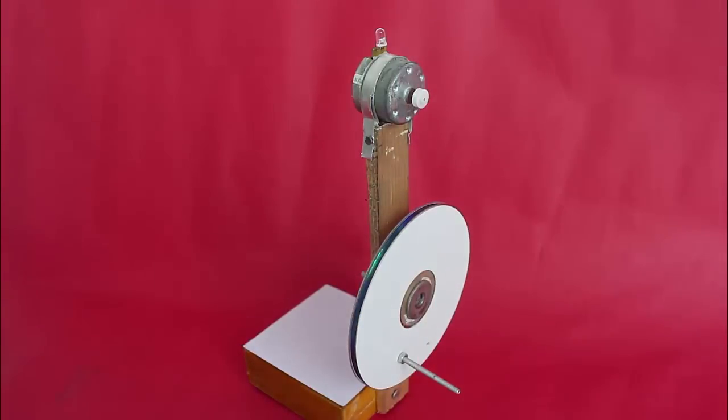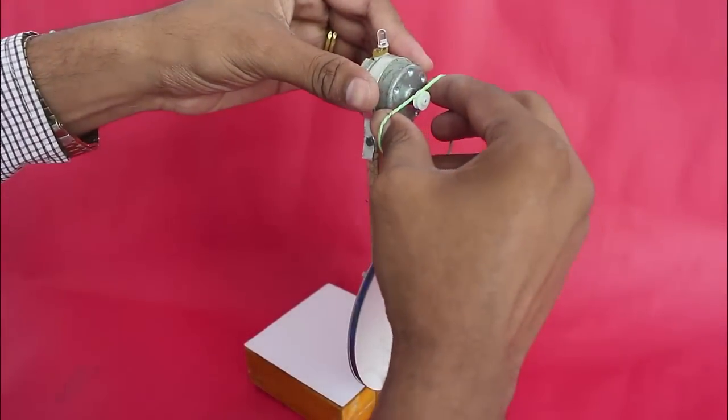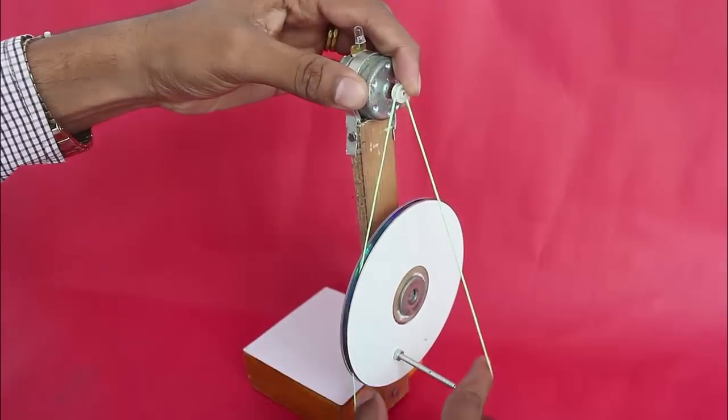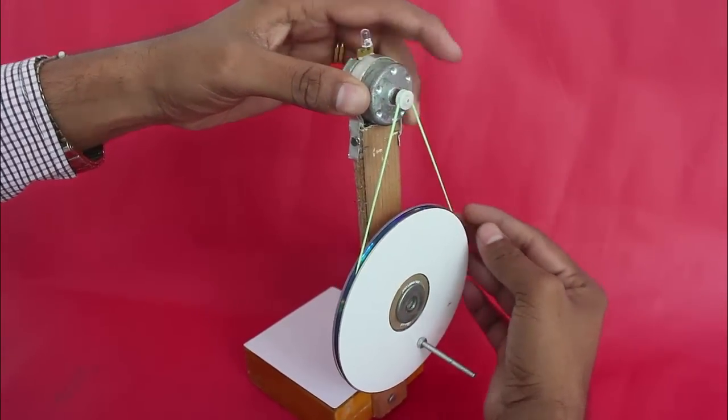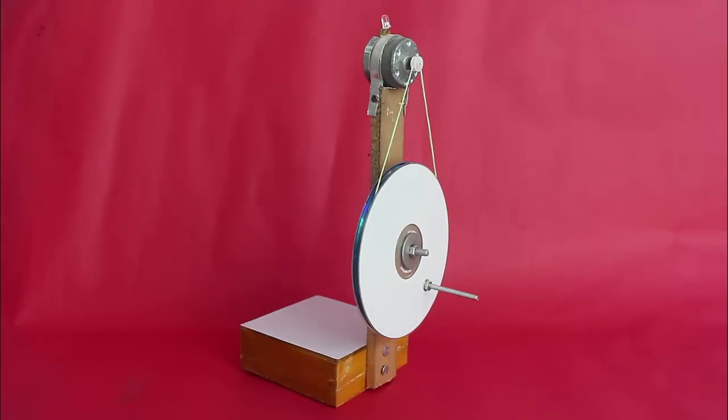Mount the motor and the LED assembly with a clamp on top of the wooden arm. Finally, connect the small pulley to the big pulley with a rubber band. Now the lighthouse is ready.